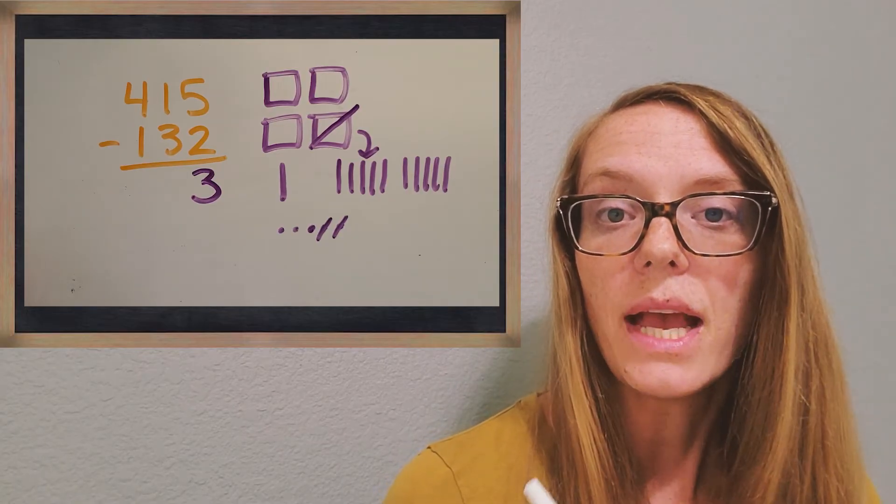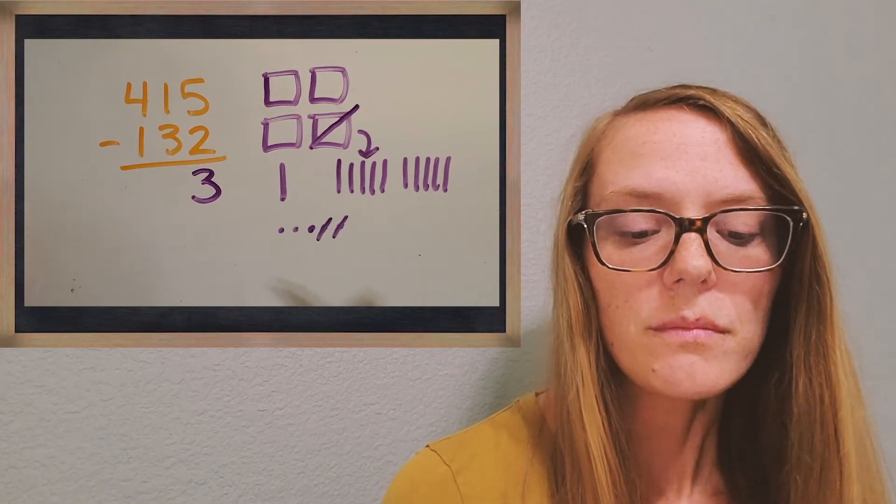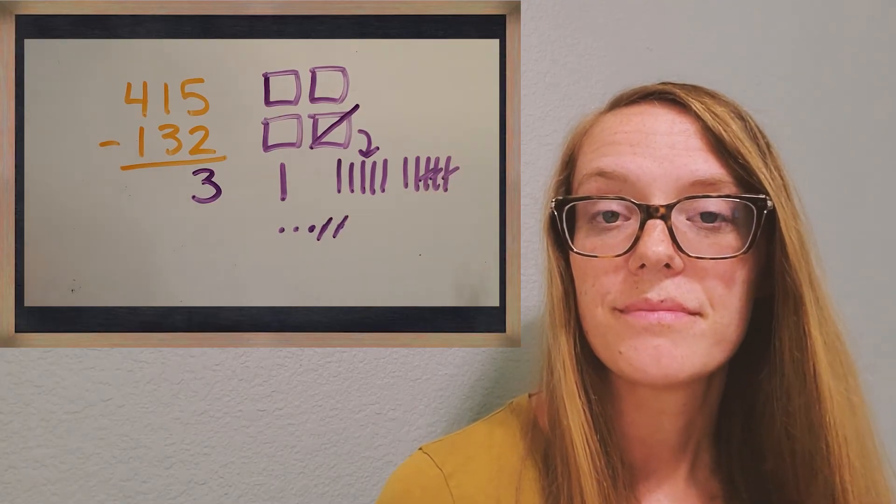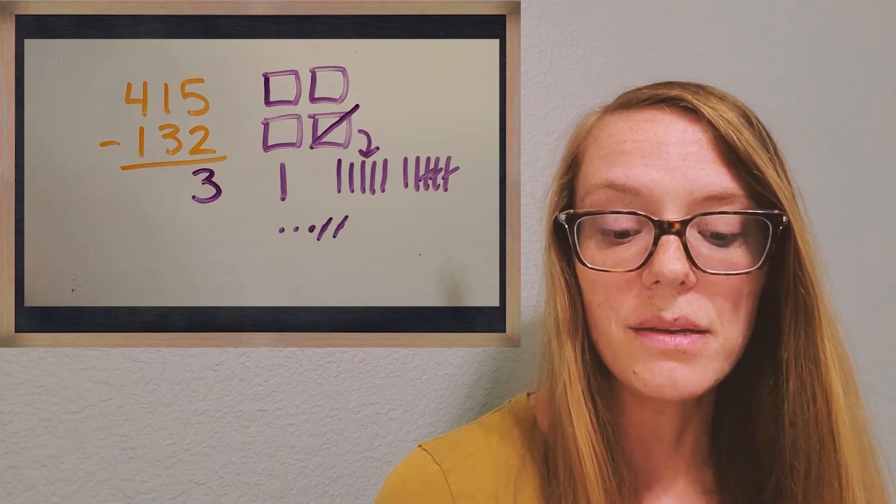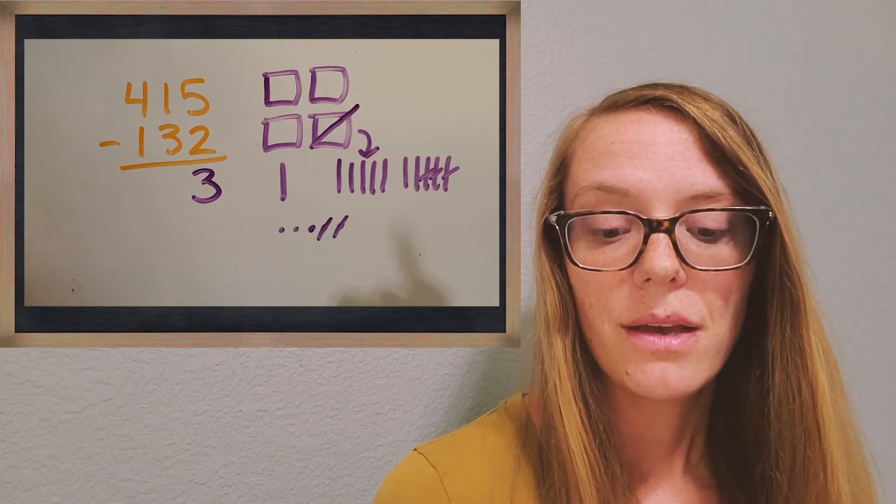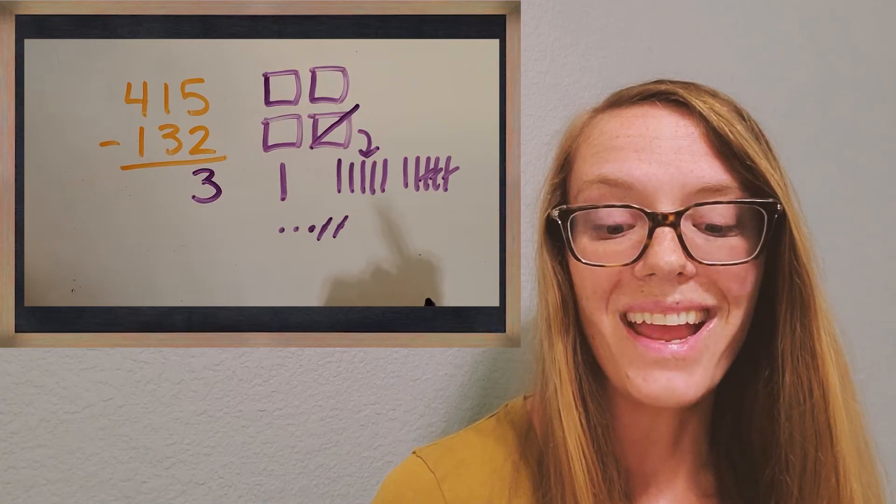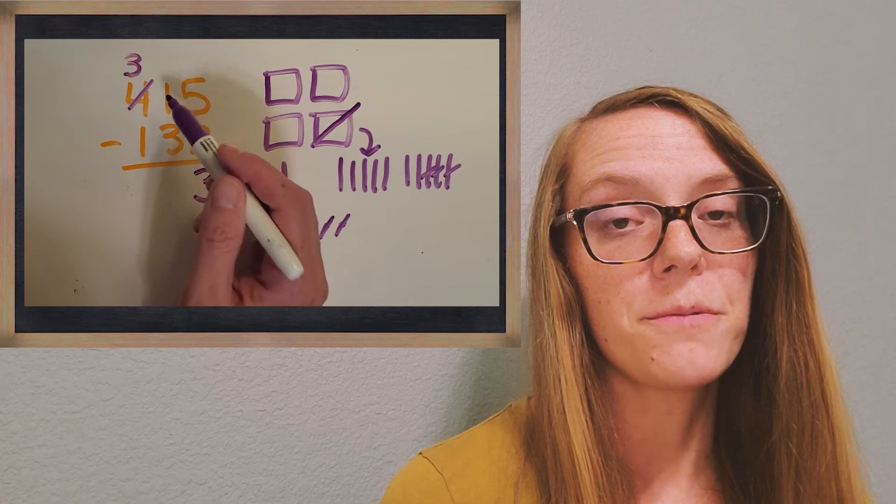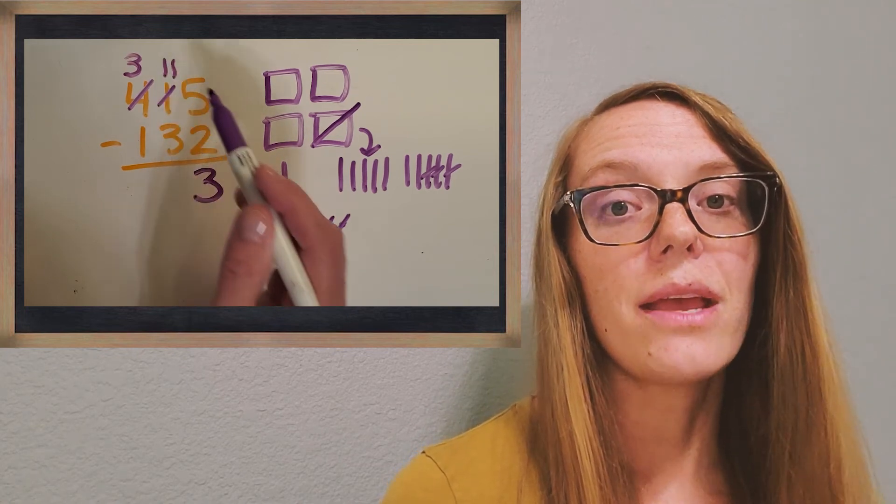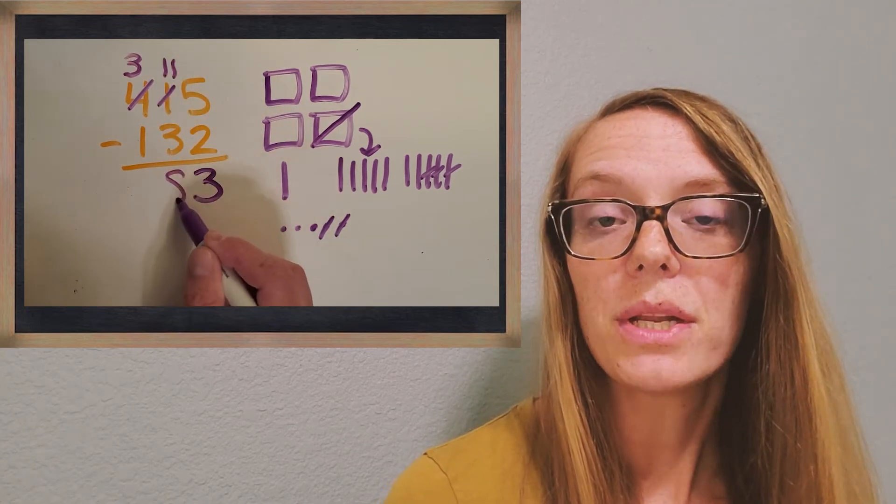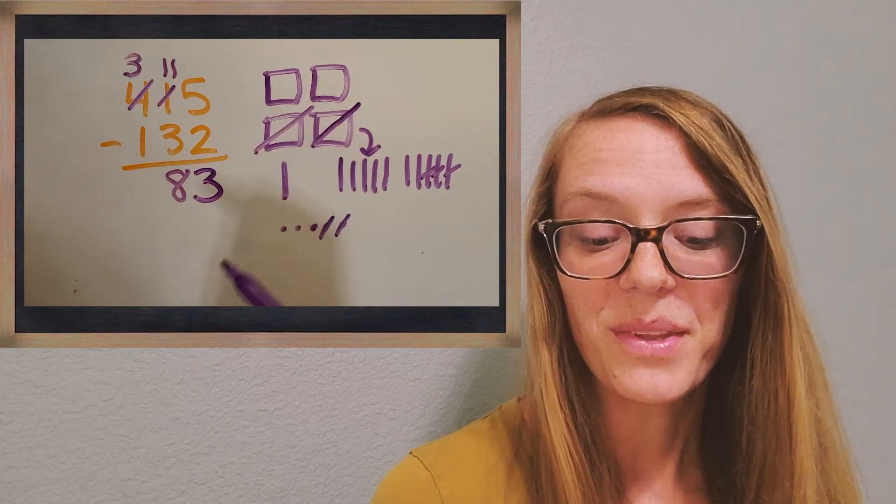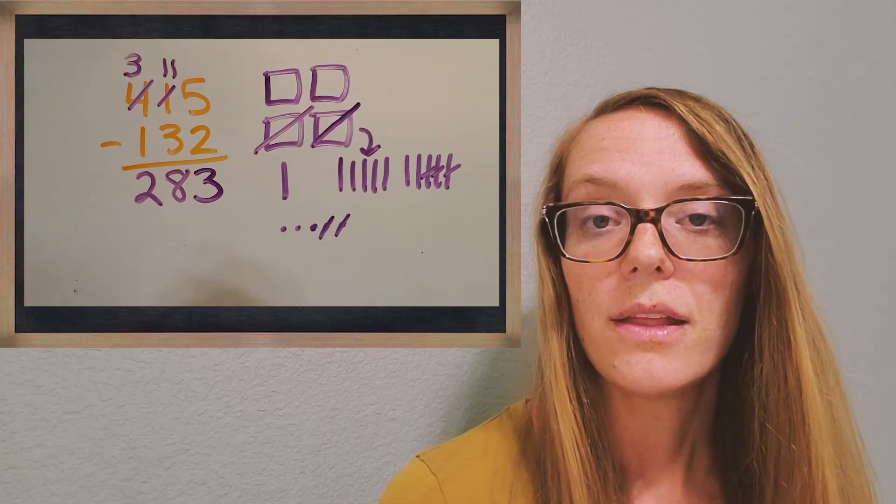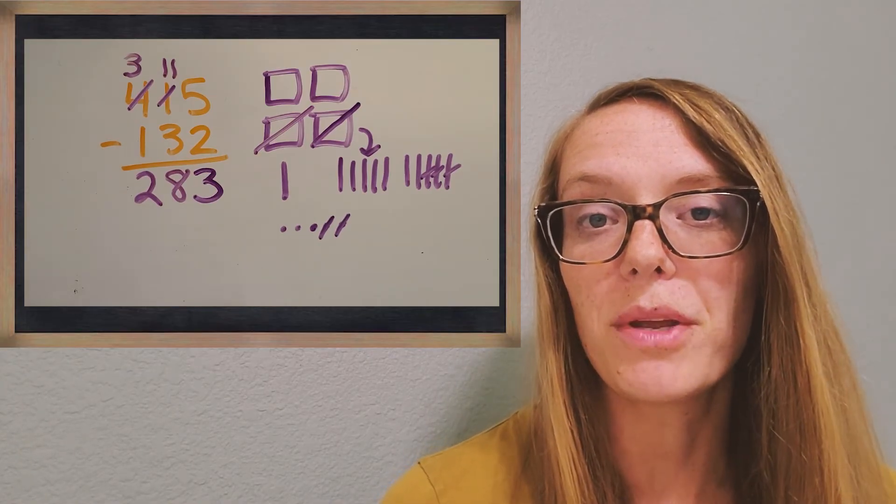And I'll show you the way it looks in the algorithm too right there. So now 11, let's take away 3. How many do you have left? Okay, awesome. We have 8 left. Okay, and then now, since I made that trade, I only have 3 flats left. And I need to take away one more. So how many do I have after that? Okay, great. 2. So I have 283 left. And those base 10 blocks helped me with my regrouping. Great job!